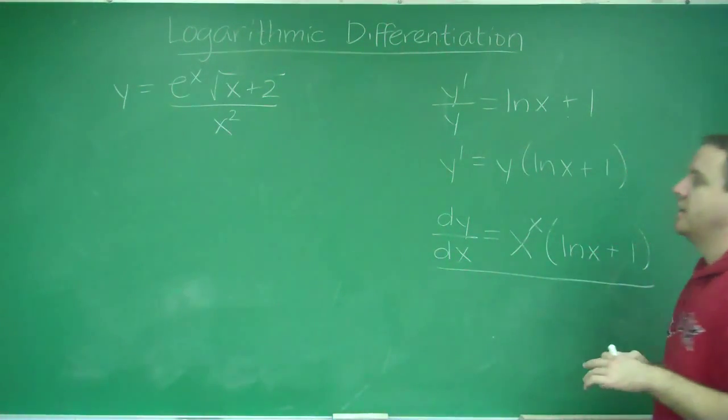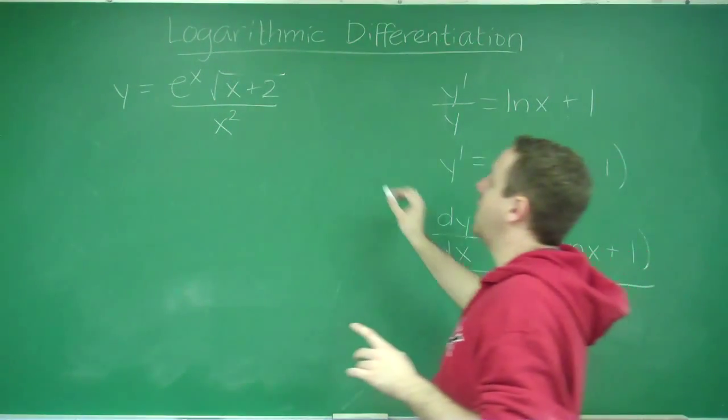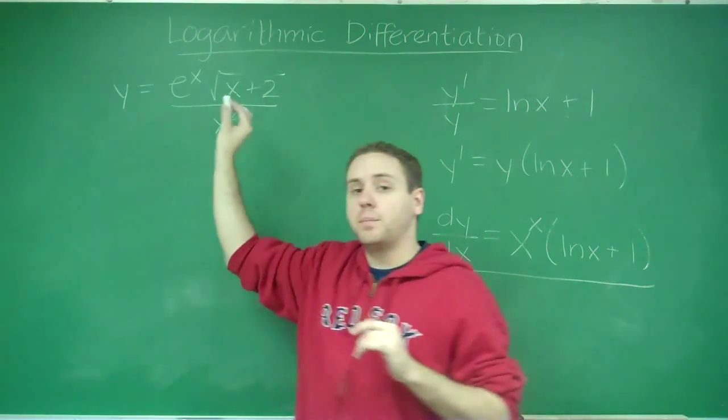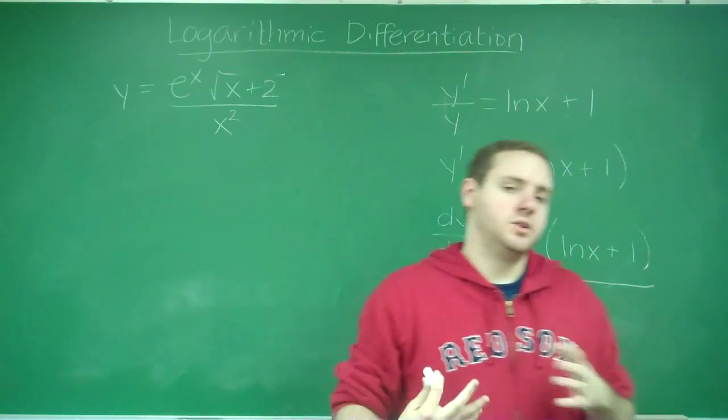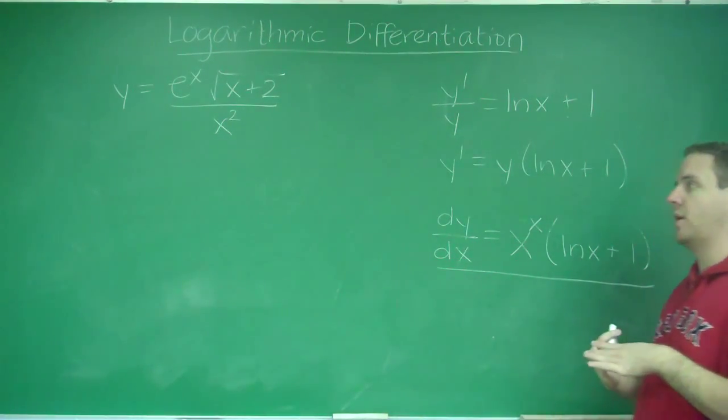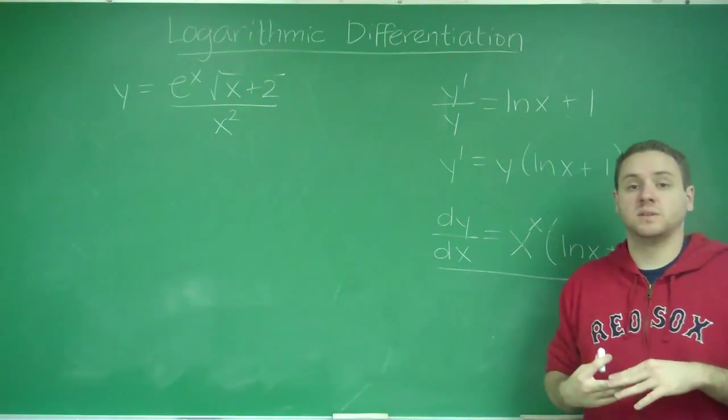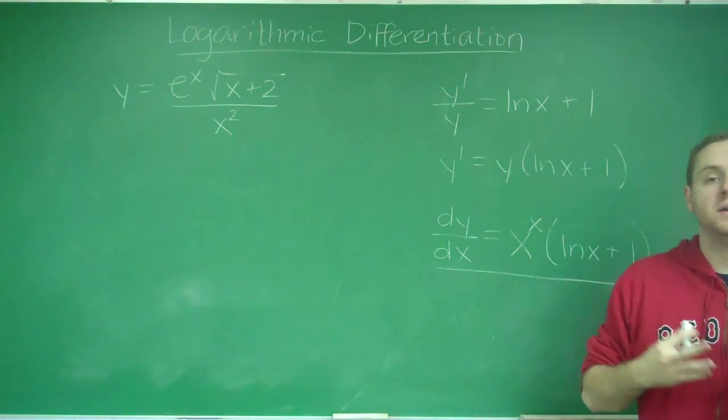Well, you can see, you could do quotient rule if you wanted to, and then when you did the derivative of the top, you would have to then do a product rule inside your quotient rule. You could do it. It would take a while. A better way to do this is using logarithmic differentiation.